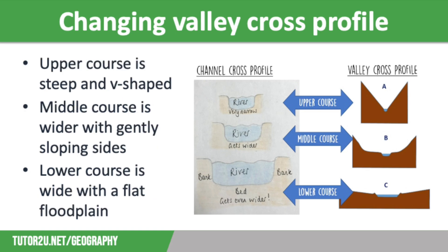So let's compare that to how the valley cross profile changes as you move downstream. The valley cross profile is a sideways look at the channel, the valley floor and the valley sides. In the upper course, the valley cross profile is steep-sided, V-shaped with a narrow valley. The valley is so narrow that the river channel will take up more of the valley floor.